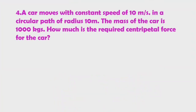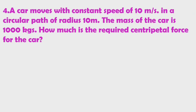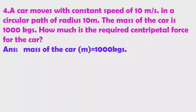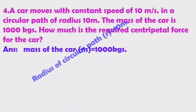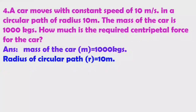Now we will see one problem based on centripetal force. A car moves with a constant speed of 10 meters per second in a circular path of radius 10 meters. The mass of the car is 1000 kilograms. How much centripetal force is required for the car? The given data: mass m = 1000 kg, radius of circular path r = 10 meters.